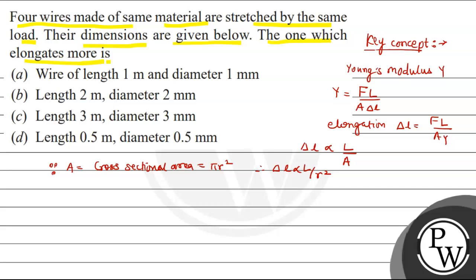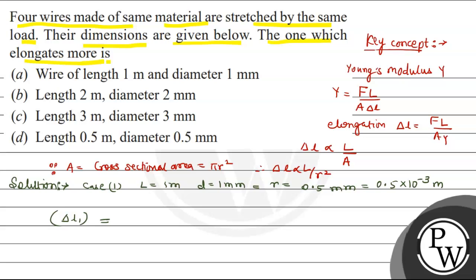Now let's look at the solution. In Case 1: L = 1 meter, diameter = 1 mm, so r = 0.5 mm = 0.5×10⁻³ meter. Therefore ΔL₁ = 1 / (0.5 × 0.5 × 10⁻⁶) = 100 / (25 × 10⁻⁶) = 4×10⁶.